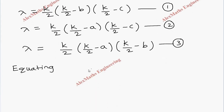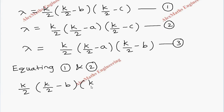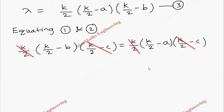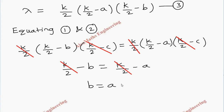Equating equations 1 and 2: (K/2)(K/2 minus B)(K/2 minus C) equals (K/2)(K/2 minus A)(K/2 minus C). We cancel K/2 from both sides and then cancel (K/2 minus C) from both sides, leaving K/2 minus B equals K/2 minus A. Cancelling K/2 and the minus signs, we get B equals A. This is equation 4.